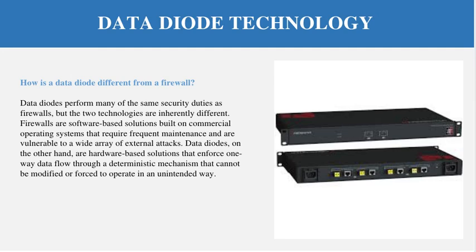Nowadays, many companies are moving toward data diode technology compared to firewalls, because the data diode is unidirectional, has an air gap, has a protocol break, and it is almost impossible to break data security through a data diode. While the firewall is also a secure solution, it is software-based and therefore not as secure as data diode technology.